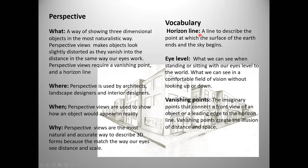So the horizon line, what do we mean by the horizon line? A line to describe the point at which the surface of the earth ends and the sky begins. So if you imagine, if you're going to a beach, say for example, and you look towards the ocean, towards the sea, and you see the last point where it looks like the sea is meeting the sky, that is the horizon line.